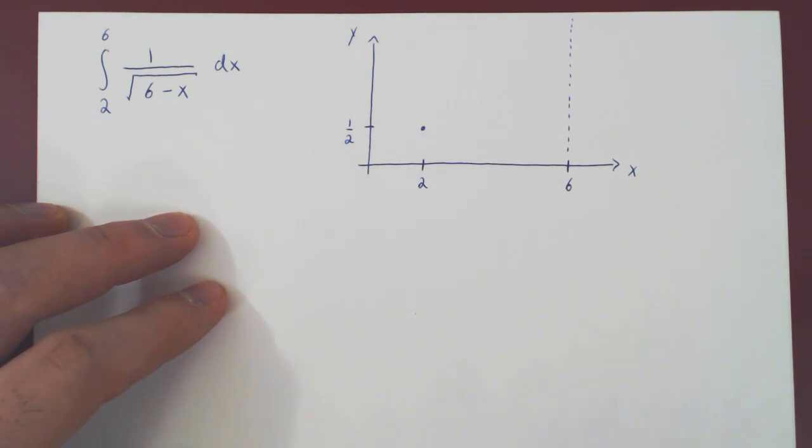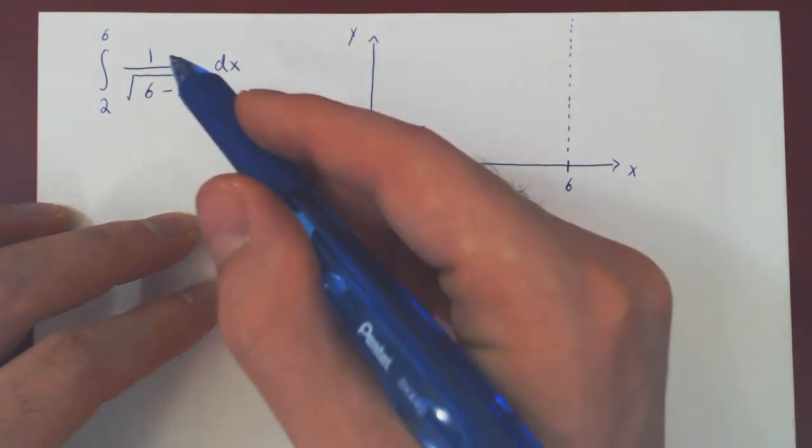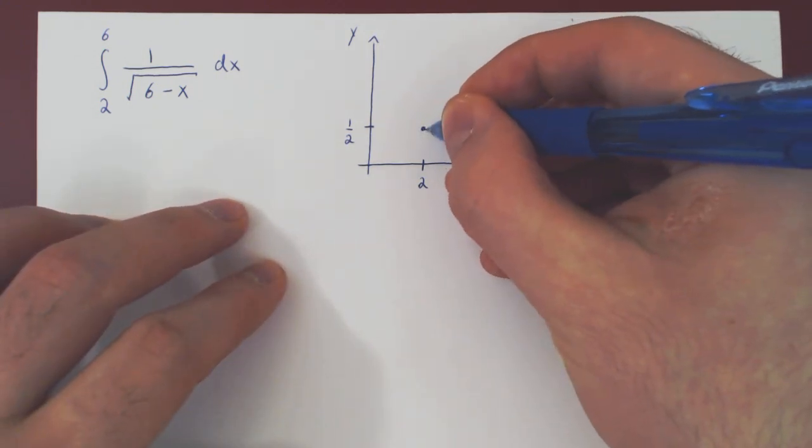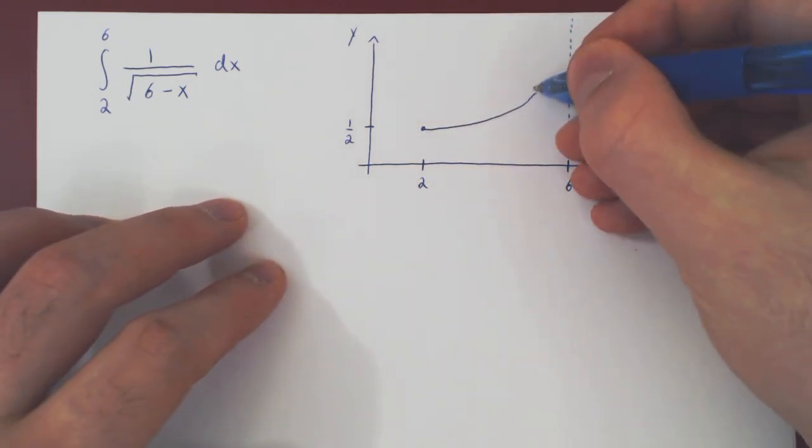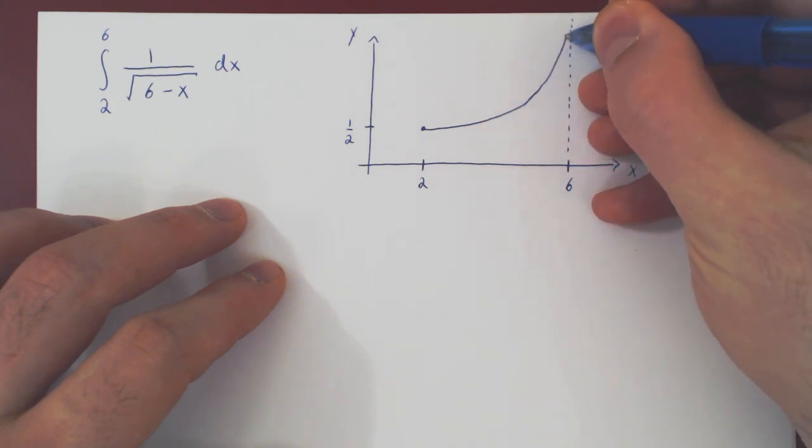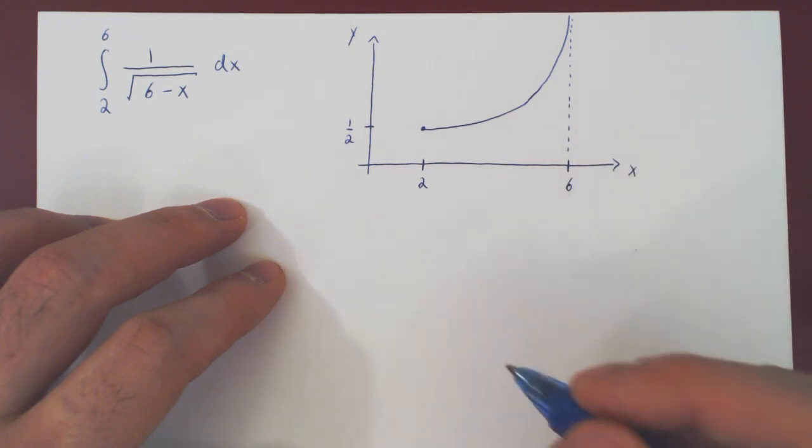But as we divide 1 by something which is getting smaller and smaller, the result is getting bigger and bigger, as 1 over something small is something big. So our function is increasing,